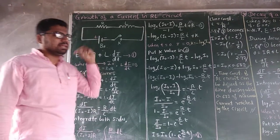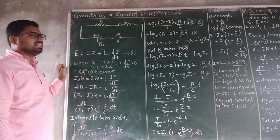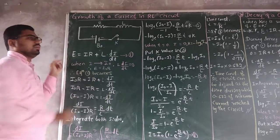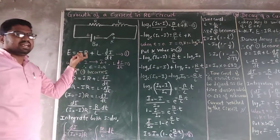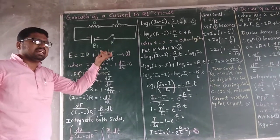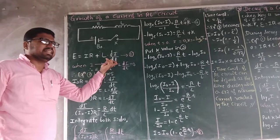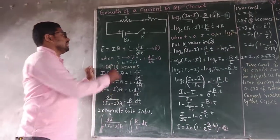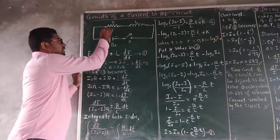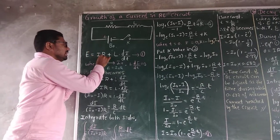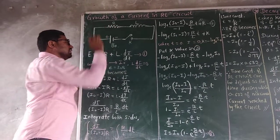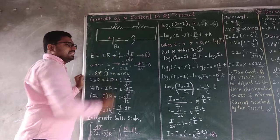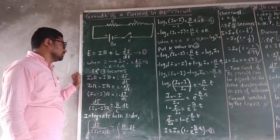The EMF is given by the equation: E = IR + L(dI/dt). This is equation number 1. Here I is the current flowing through the circuit, R is the resistance, and L is the inductance of the circuit.